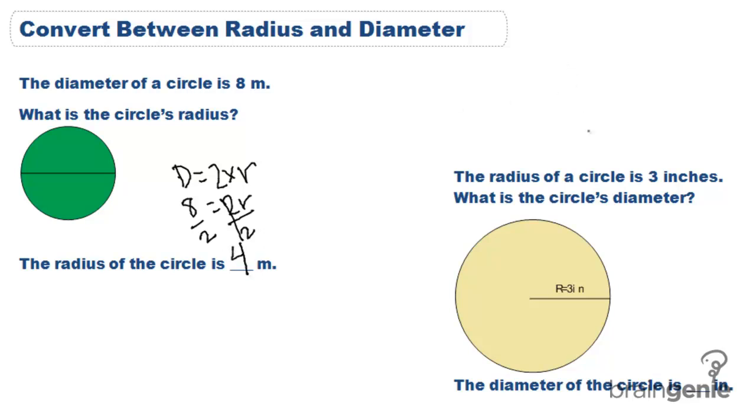Now over here with our yellow circle, we know that the radius is 3 inches and we need to find the diameter.